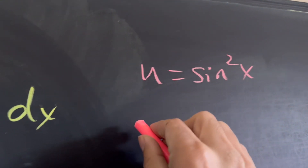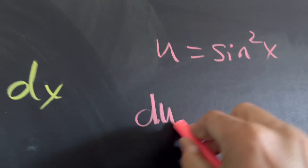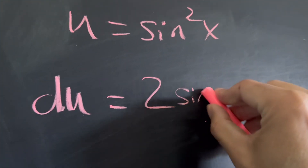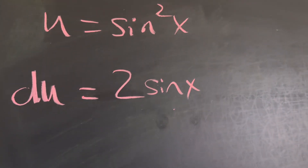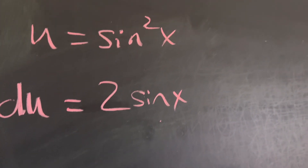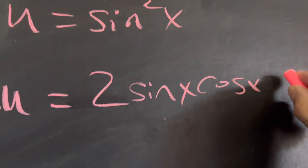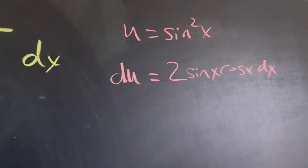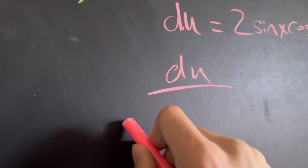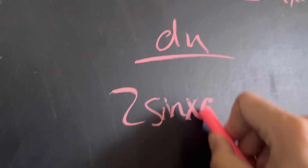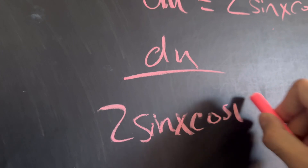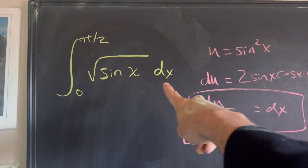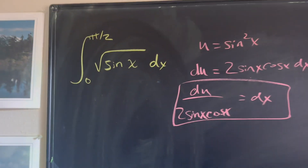So now let's find the differential. We're going to take the derivative, which gives us du equals — applying the chain rule — two sine of x times cosine of x dx. Dividing over, we get du over two sine x cosine x equals our differential, and that's exactly what we're going to need.